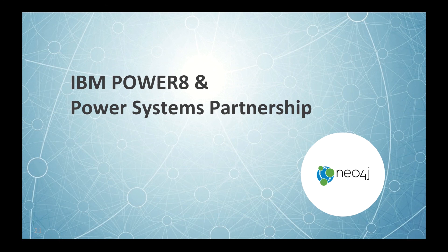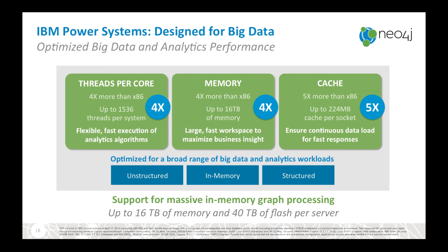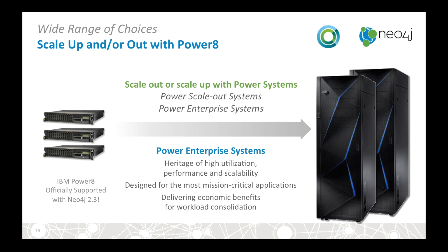With Neo4j 2.3, we're excited to announce our partnership with IBM Power8 and Power Systems. This allows you to scale up your Neo4j servers to a level we haven't seen before. It allows you to provide up to 16 terabytes of memory and 40 terabytes of flash per server for massive in-memory graph processing. The Power8 system allows you to scale both vertically, with this massive amount of in-memory processing, but also allows you to scale horizontally. We now officially support IBM Power8 with Neo4j 2.3.